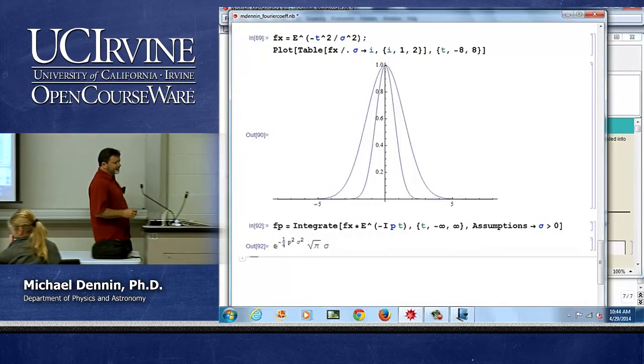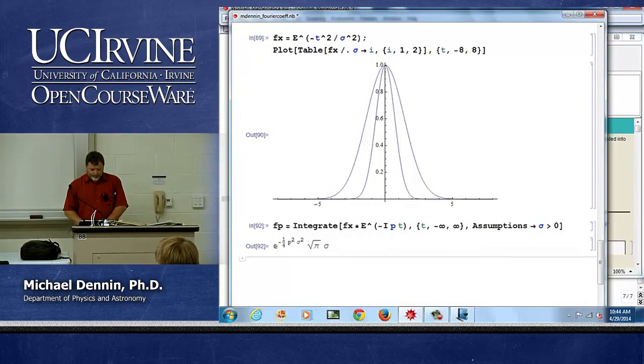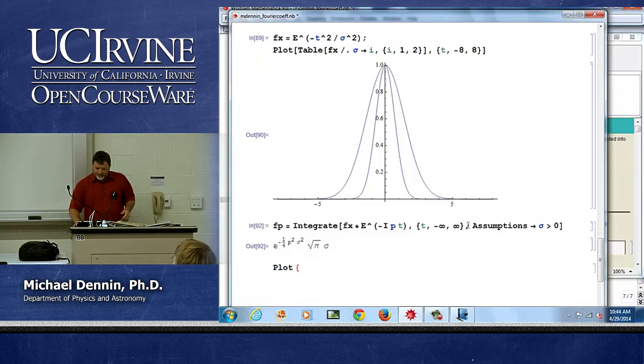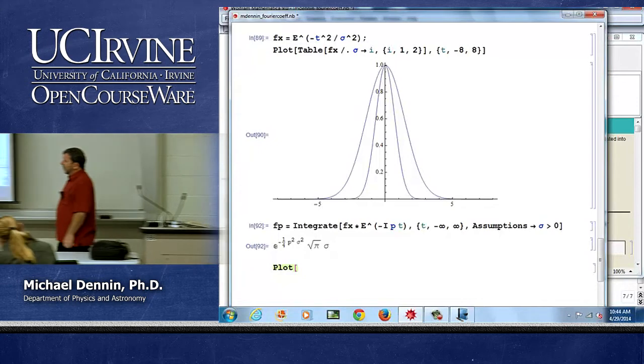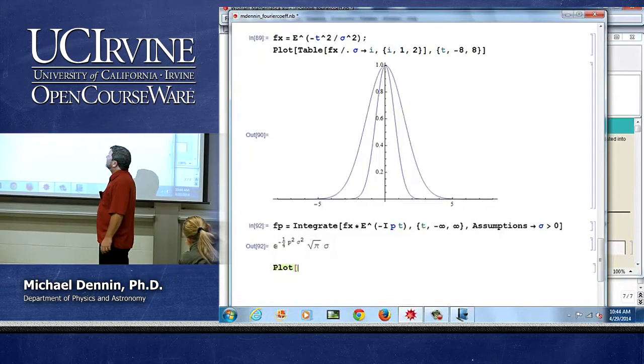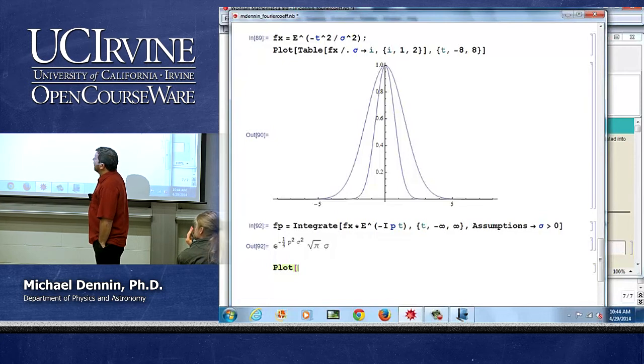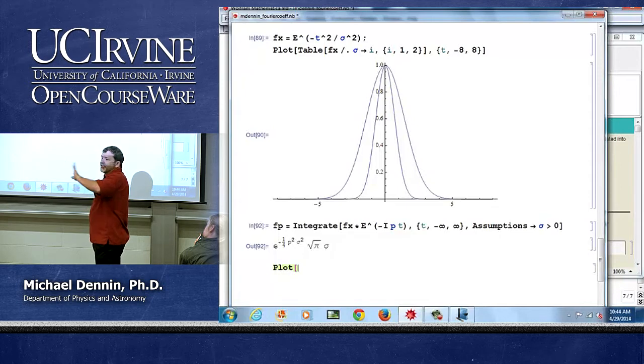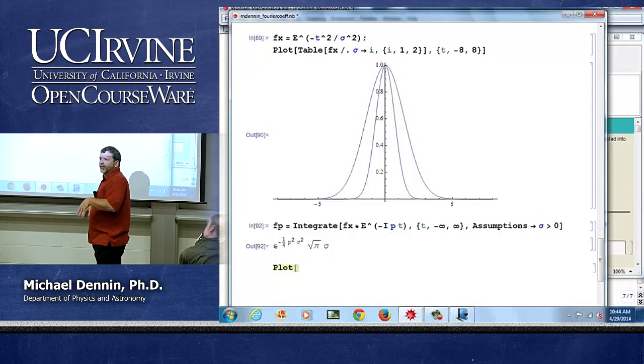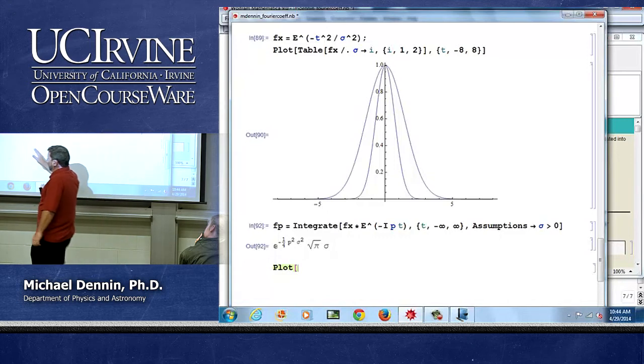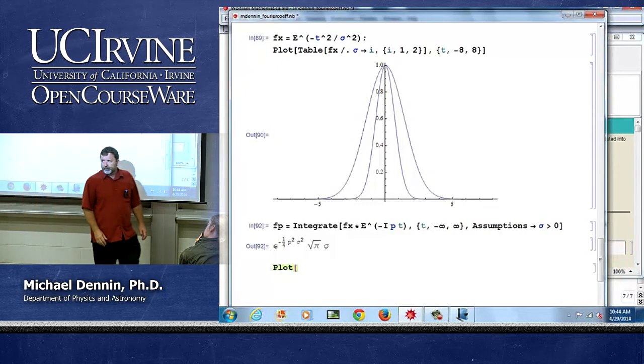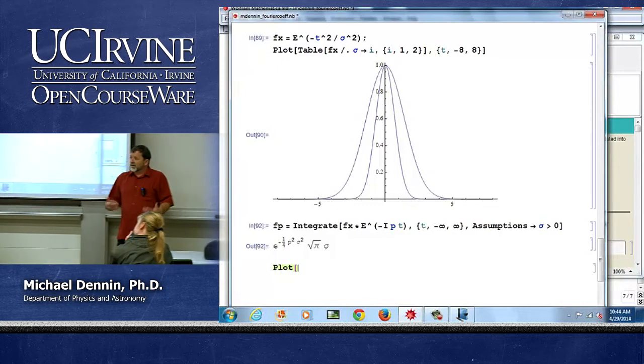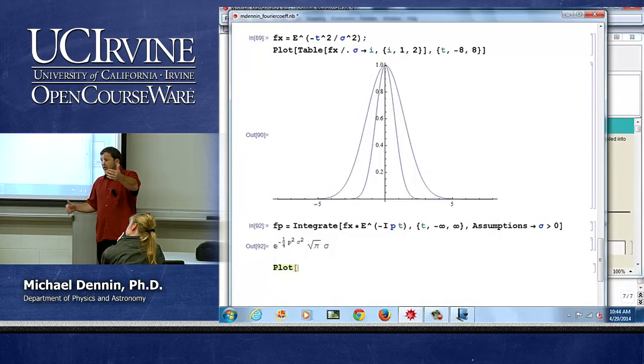And now what we can do is plot the two of these together. Now here's kind of a fun challenge. I want to plot these on the same graph. What's the first problem you see? What's fx a function of? Well, let's suppose I want to fix sigma. Because that's the width of my thing. I'm going to fix some value of sigma, which I can do with my slash dot. So fx is a function of t, should have been a function of x again. What is fp a function of? P. And I'm going to plot them on the same plot.